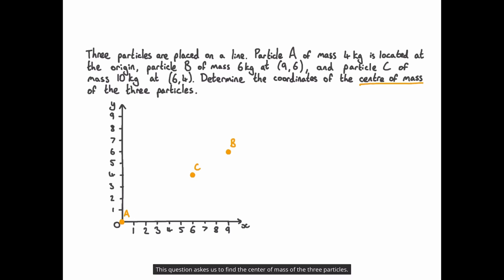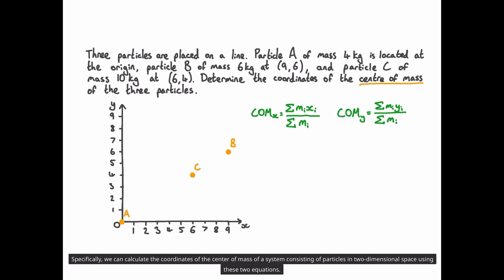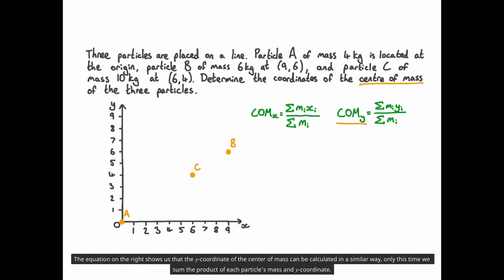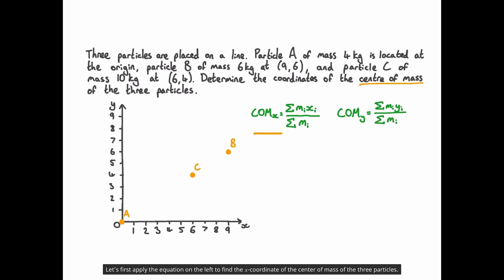This question asks us to find the centre of mass of the three particles. We can recall that the centre of mass is effectively the average position of all of the mass in a system, and we can calculate the exact position by finding the average position of those particles weighted according to their mass. Specifically, we can calculate the coordinates of the centre of mass using two equations. The equation on the left tells us that the x-coordinate of the centre of mass, written com sub x, can be found by adding together the product of each particle's mass and x-coordinate, and dividing by the sum of all the masses. The equation on the right gives the y-coordinate in a similar way, using each particle's y-coordinate instead.